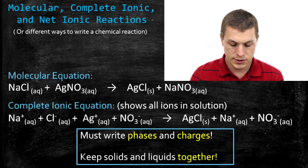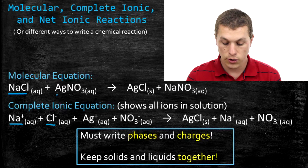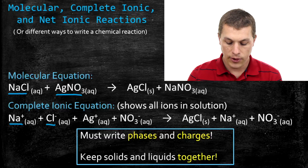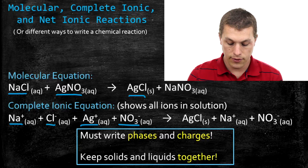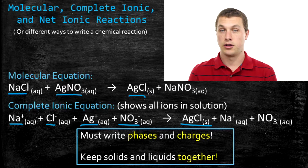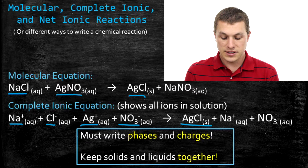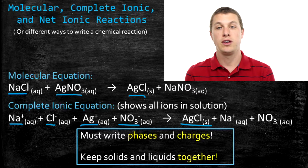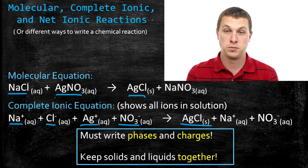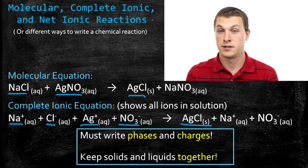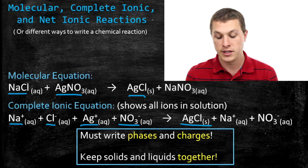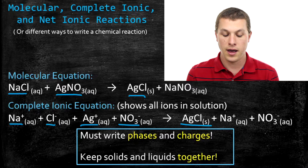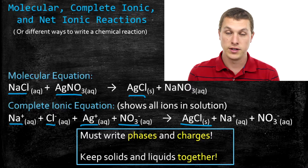For example, we had sodium and chlorine written together, and now we have sodium by itself and chlorine by itself. We had sodium and nitrate together in the molecular equation, and now we have them separately. On the product side, we had silver chloride together, and silver chloride is still together in the complete ionic equation. Why? It turns out that if you have a solid or a liquid, that's actually not dissociating. It's only soluble ionic compounds that split apart. Since silver chloride is in the solid phase — that is, it's insoluble — it doesn't split apart. So when we write the complete ionic reaction, we always keep solids and liquids together.